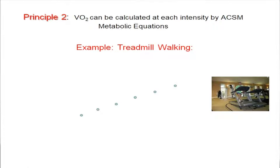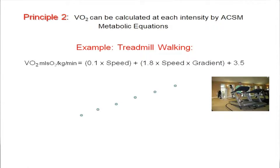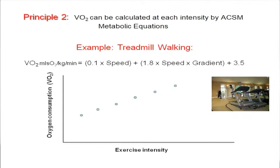For treadmill walking, we can use this equation and put in the data for the various exercise intensities — walking at different speeds or the same speed with increasing gradient. For example, walking at 3 miles an hour on a treadmill at 10%, we can show that the oxygen cost of that intensity would be 26.0 millilitres of oxygen per kilogram body weight per minute.